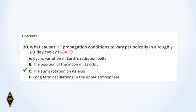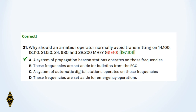And 30: What causes HF propagation conditions to vary periodically in a roughly 28-day cycle? The sun's rotation on its axis. And 31: Why should an amateur operator normally avoid transmission on 14.1 MHz and those related frequencies? That's a beacon frequency — a system of propagation beacon stations operates on those frequencies.